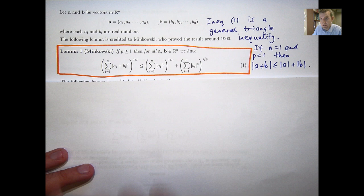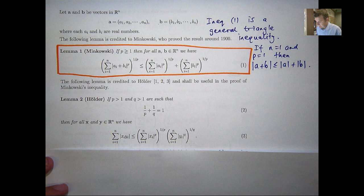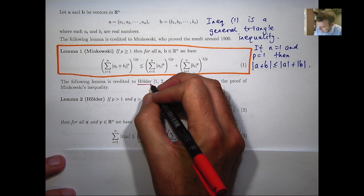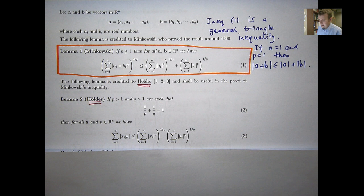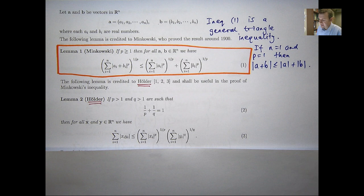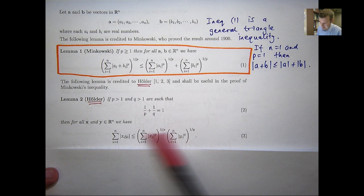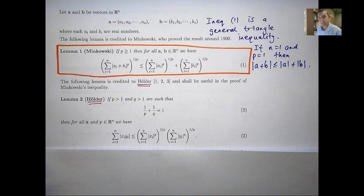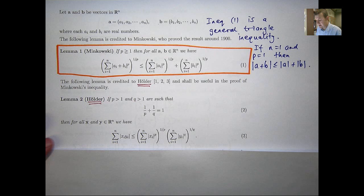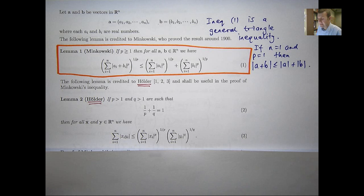So let's talk about the proof. For the proof, I'm going to need another inequality attributed to a mathematician called Holder. Now, it's custom to put this result down to Holder, although a year before another mathematician called Rogers proved a slightly different inequality. Reference 3 here is a recent YouTube presentation of my own centered around Holder's inequality. I said in that video that I would give some applications of Holder's inequality to various aspects of mathematics. Well, this video can be very loosely regarded as an application of Holder's inequality.